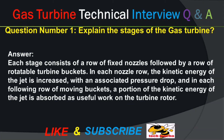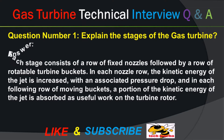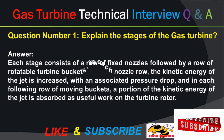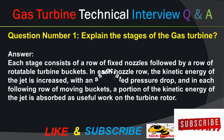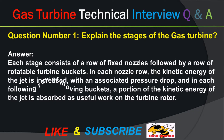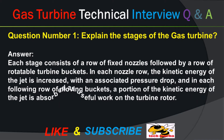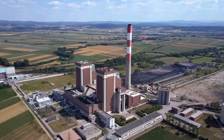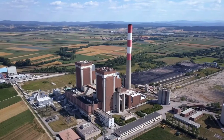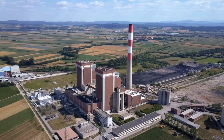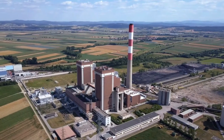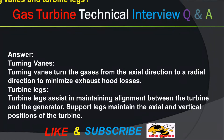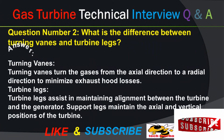Question number one: explain the stages of the gas turbine. Answer: each stage consists of a row of fixed nozzles followed by a row of rotatable turbine buckets. In each nozzle row, the kinetic energy of the jet is increased with an associated pressure drop, and in each following row of moving buckets, a portion of the kinetic energy of the jet is absorbed as useful work on the turbine rotor.